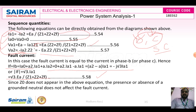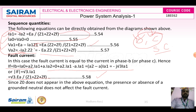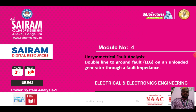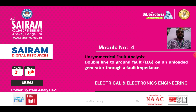Since the grounded neutral is absent, the fault current is not affected by the grounded neutral in this LL fault. Similarly, we have LLG fault on an unloaded generator through a fault impedance, which will be discussed in the next video. Thank you everyone.